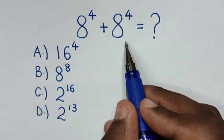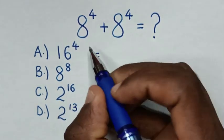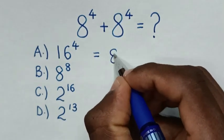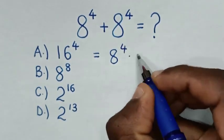So, from this problem, it will be equal to 8^4 + 8^4, which is the same as 8^4 times 2.